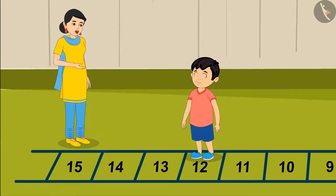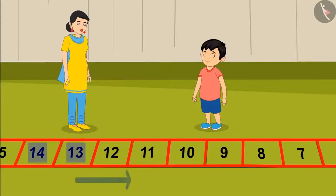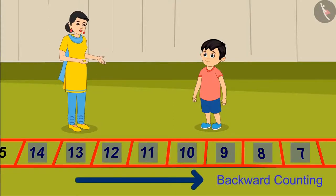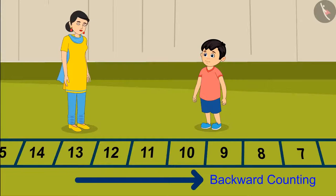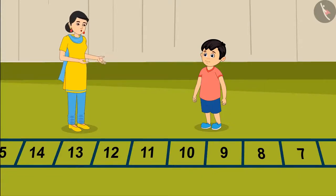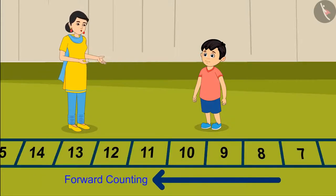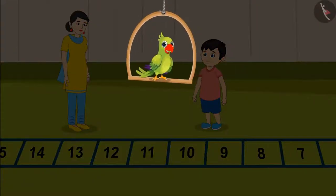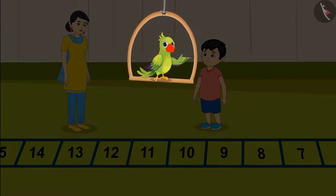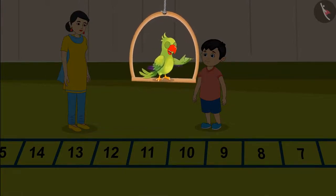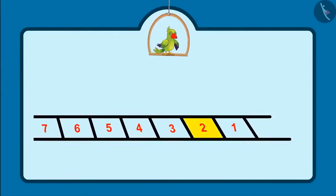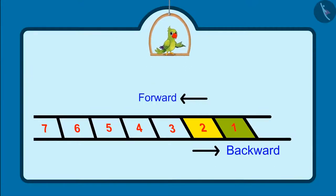Yes Jhotu, you are right! When we go back from a number, it is counting a number lesser, or it is called backward counting! And here you can see: a number backward from 2 is 1, and forward from 2 is 3!